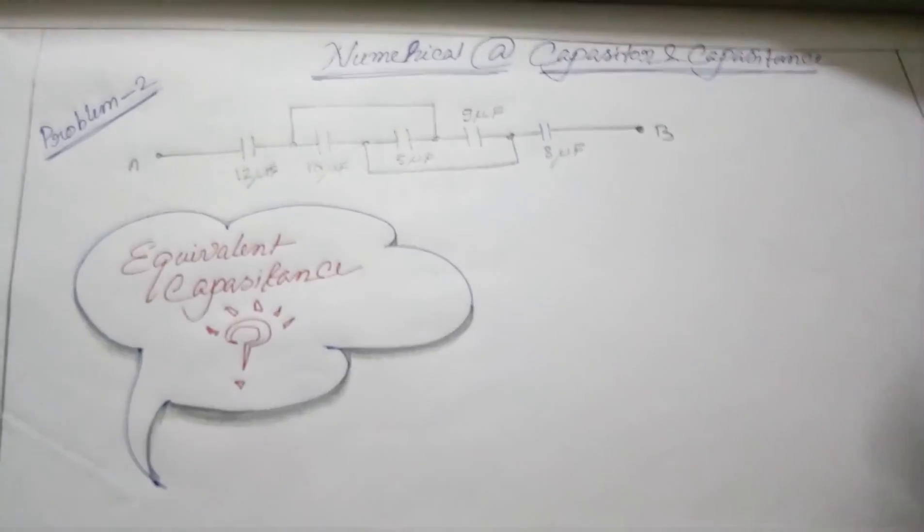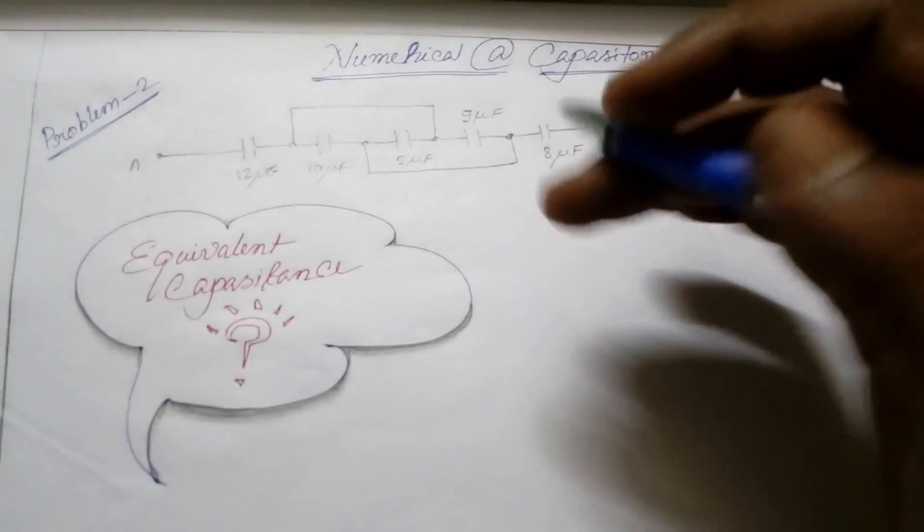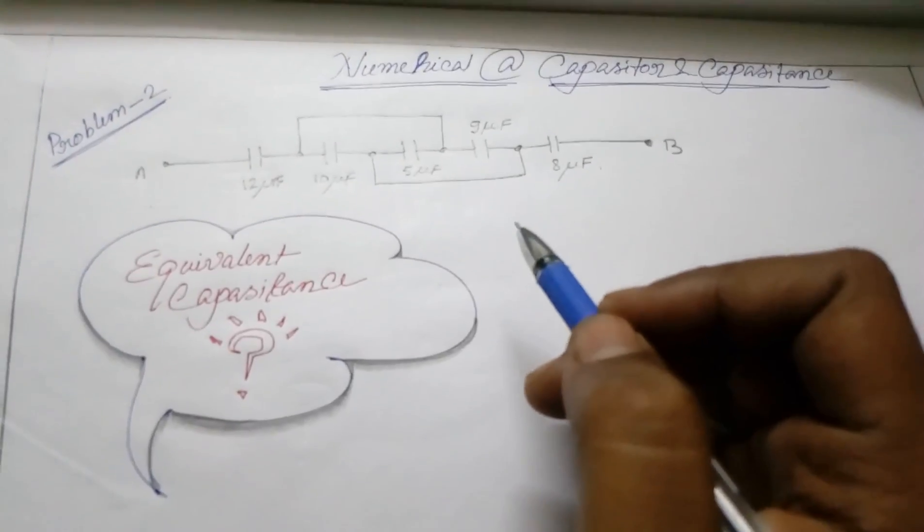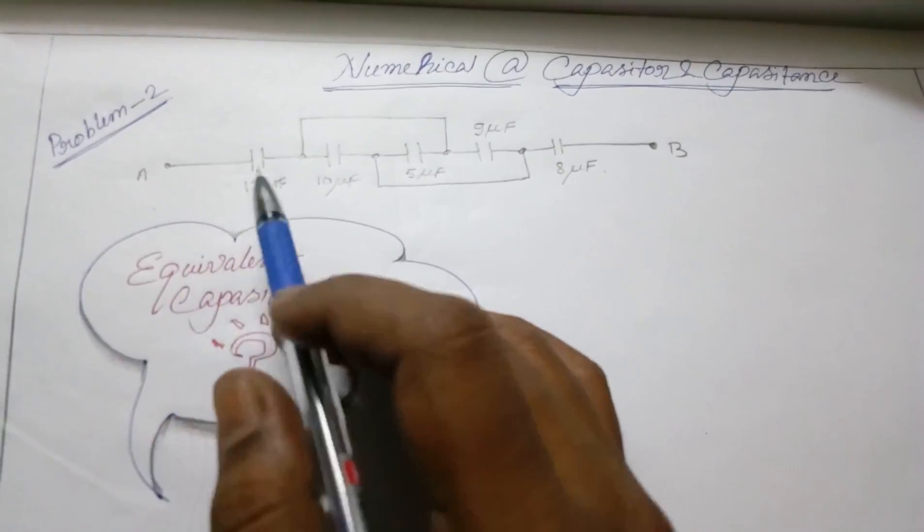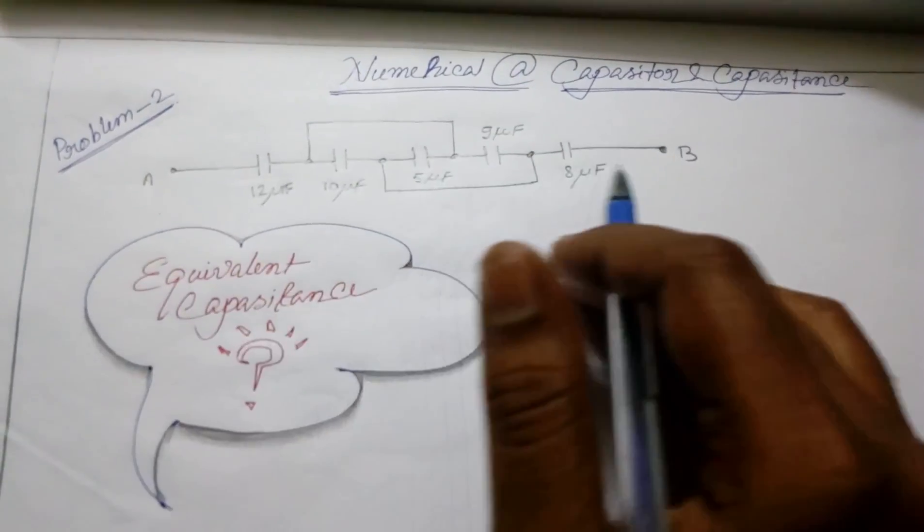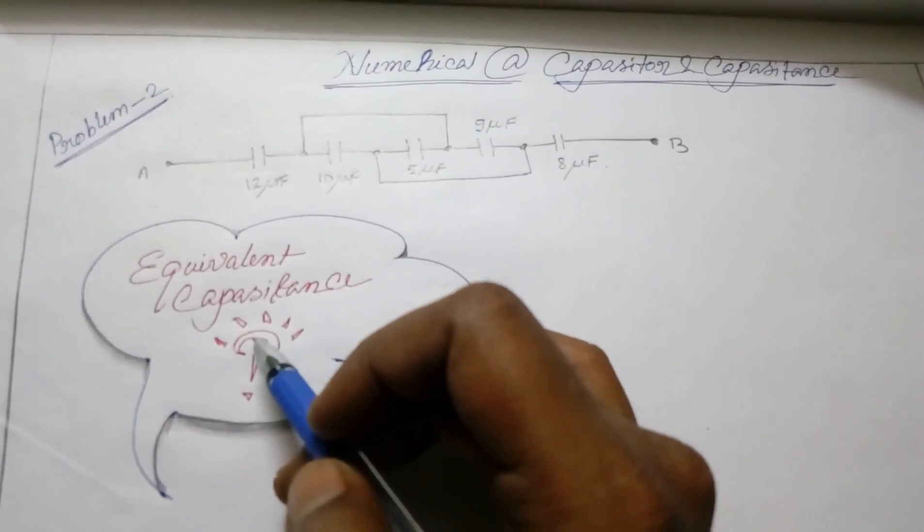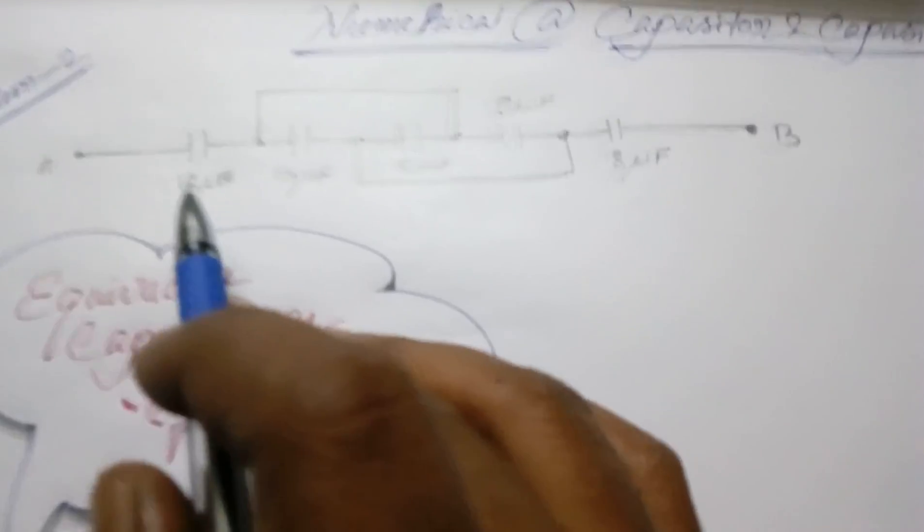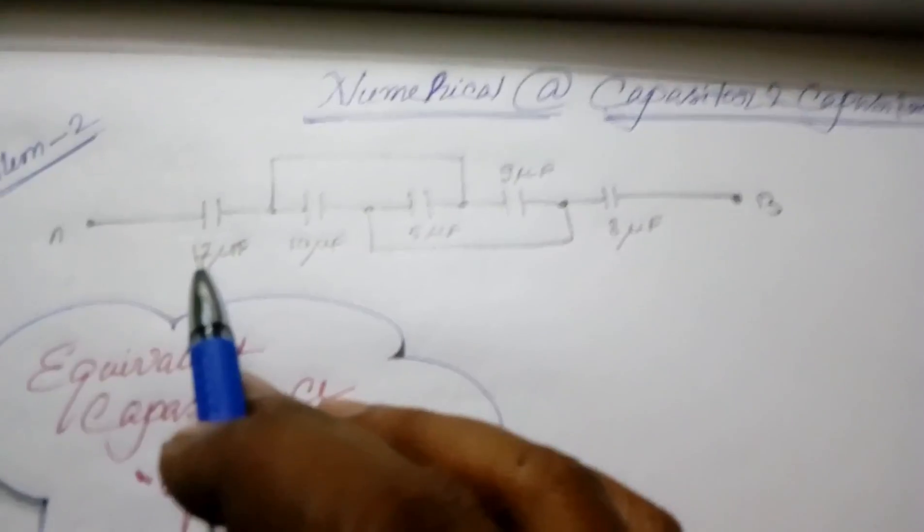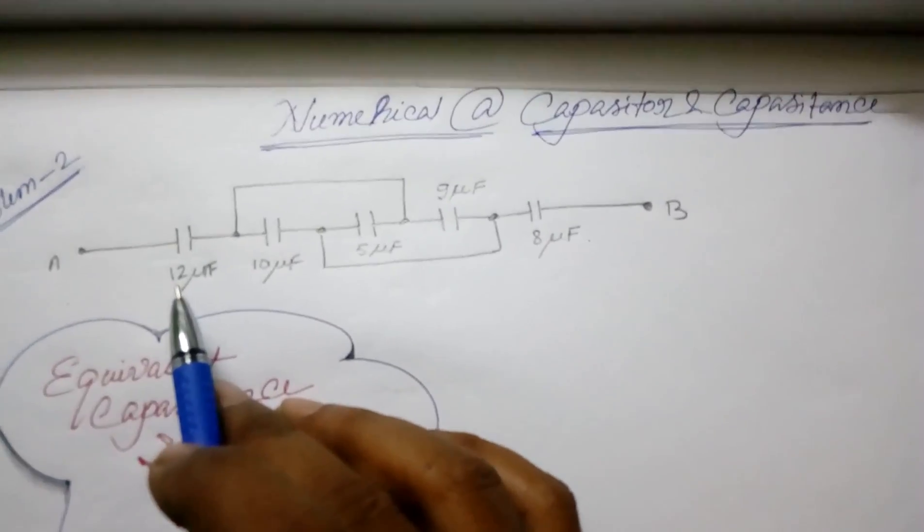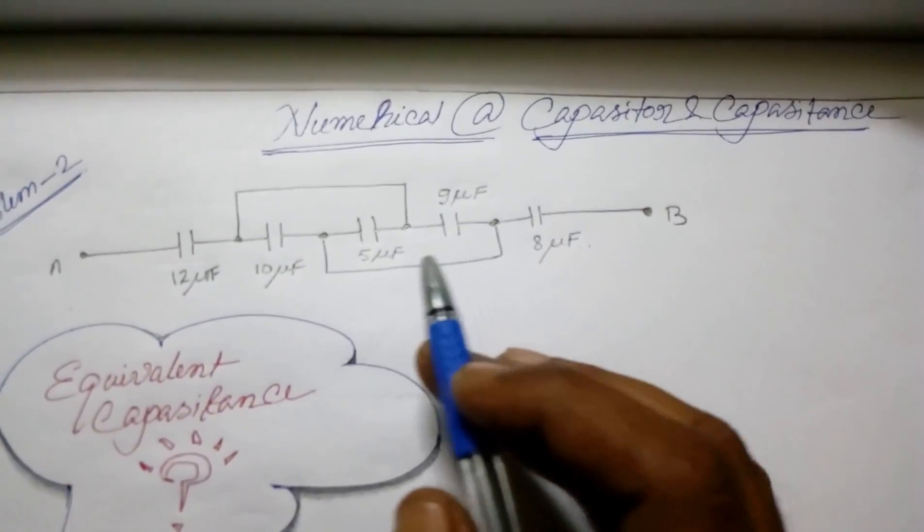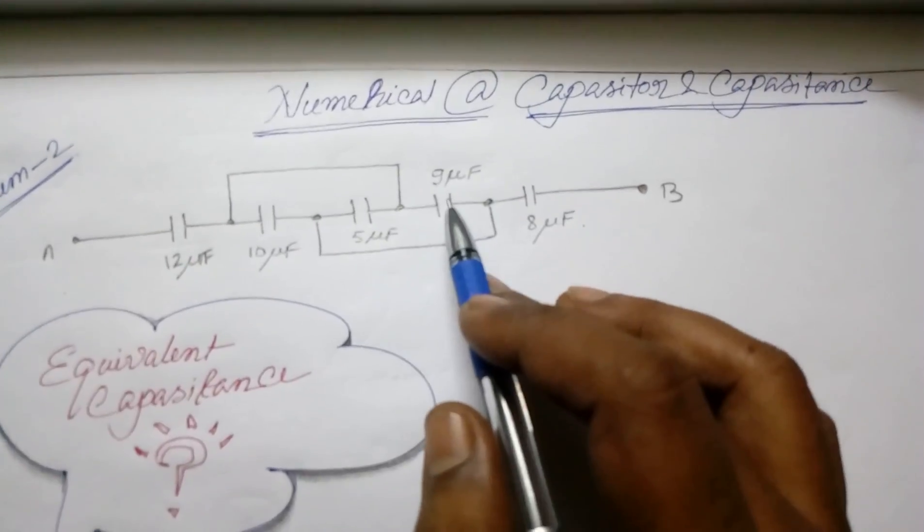Let's do another numerical problem, problem 2. We have a circuit connection - you can see the circuit connection. What you have to find out is the equivalent capacitance. So we have 5 capacitors: 12 microfarad, 10 microfarad, 5 microfarad, 9 microfarad, and 8 microfarad.